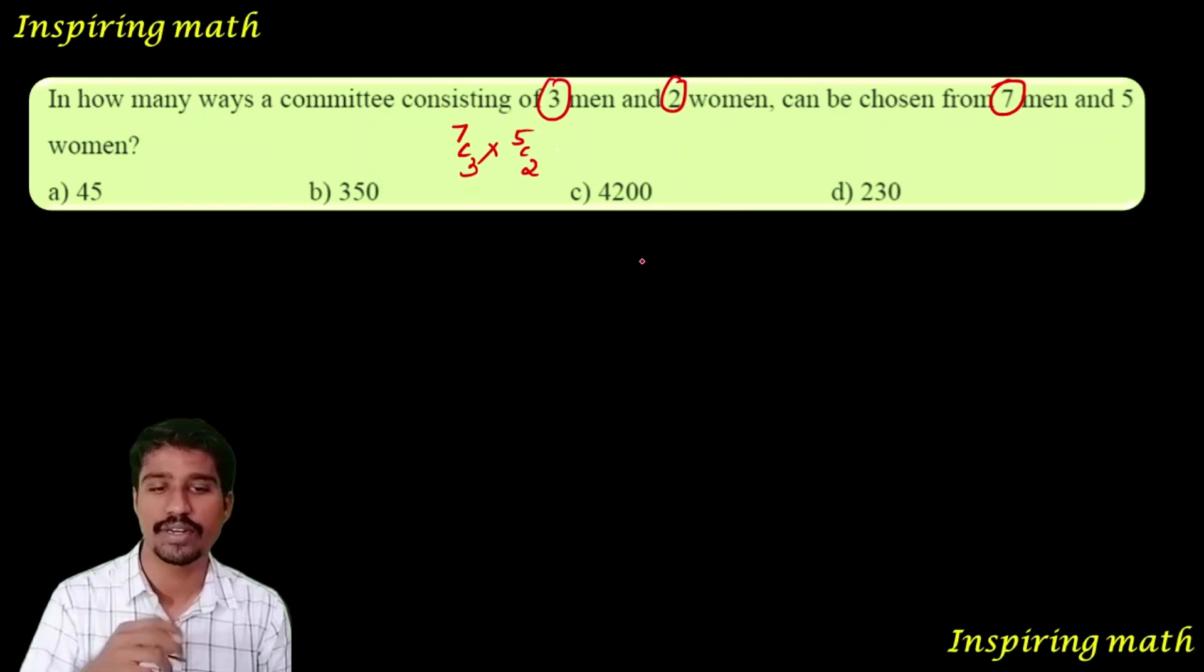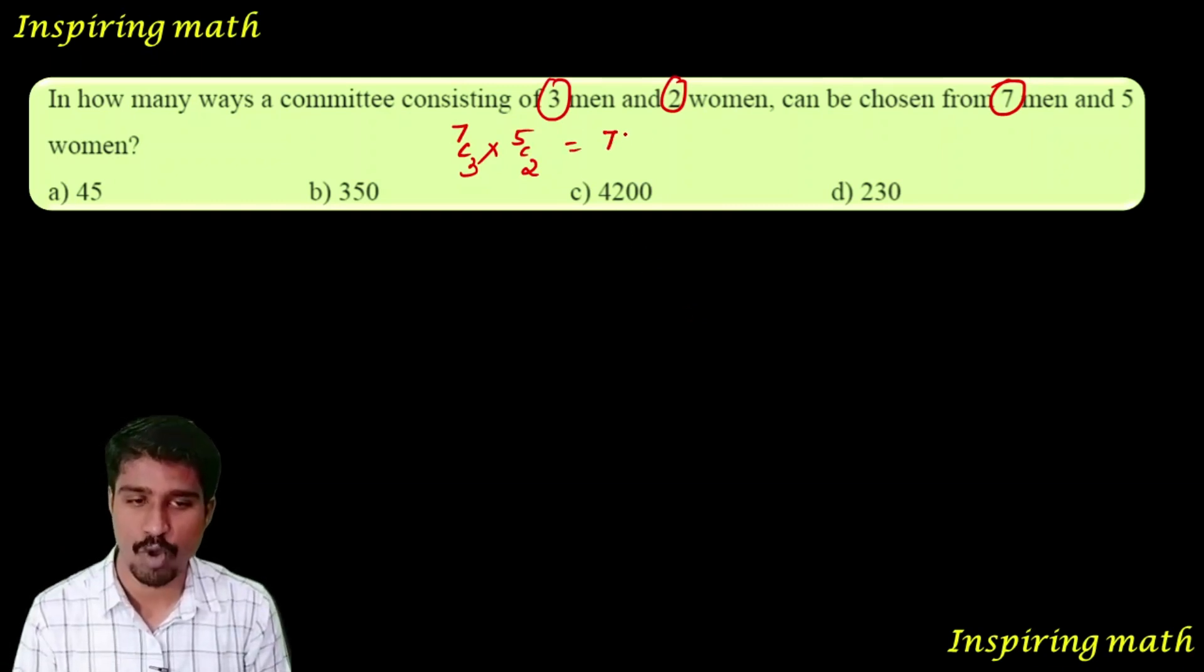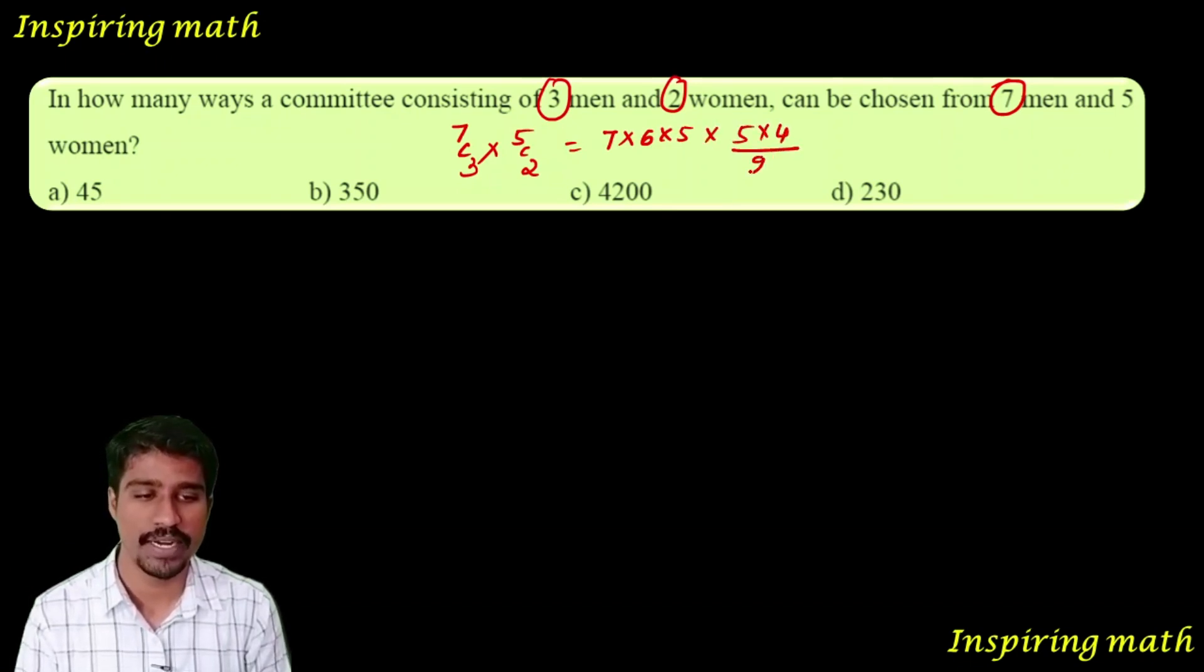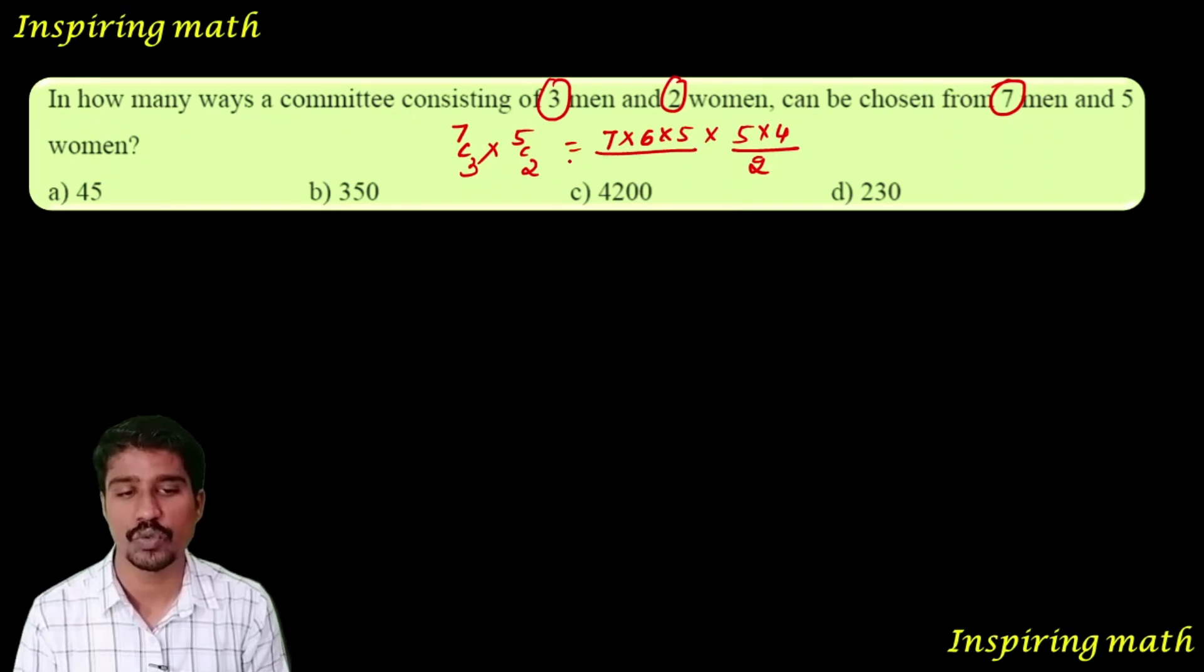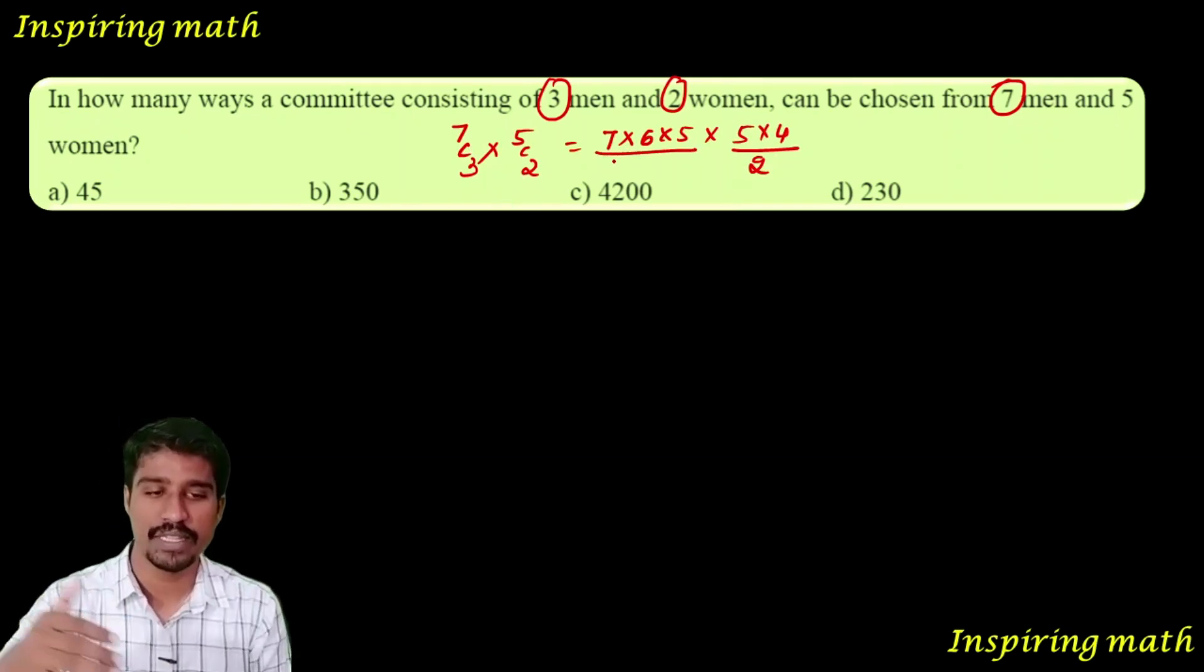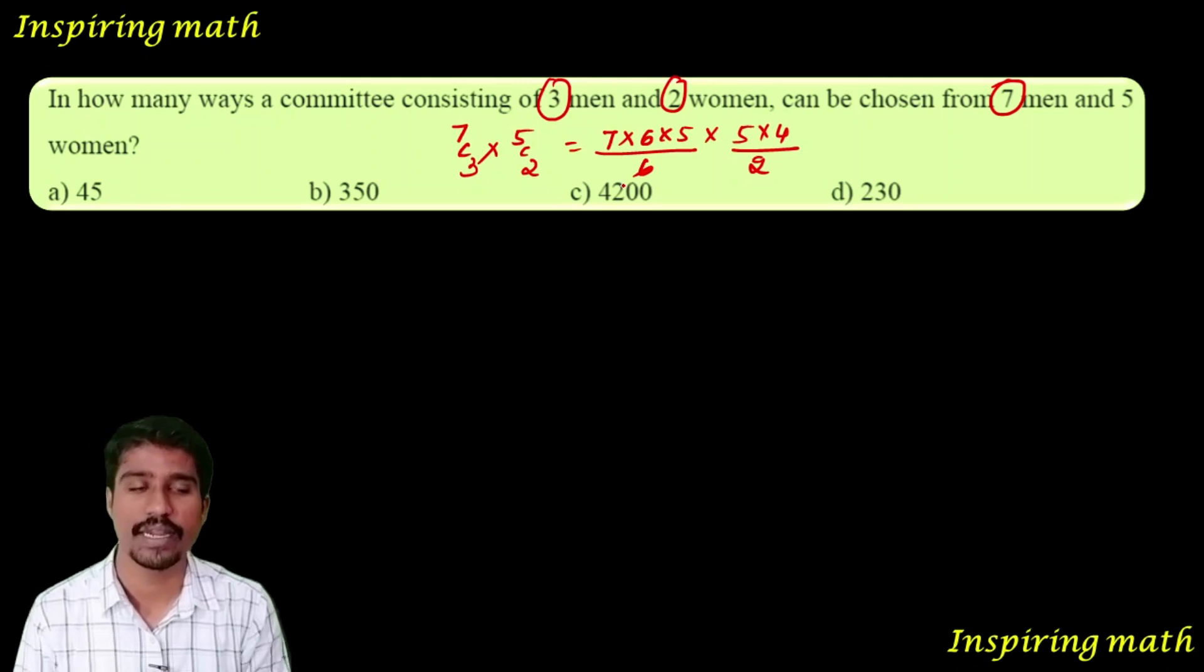The answer is 4200. 7C3 can be written as 7 into 6 into 5, and 5C2 is 5 into 4 divided by 2 factorial, which equals 2. Here, 7C3 divided by 3 factorial can be written as 6.